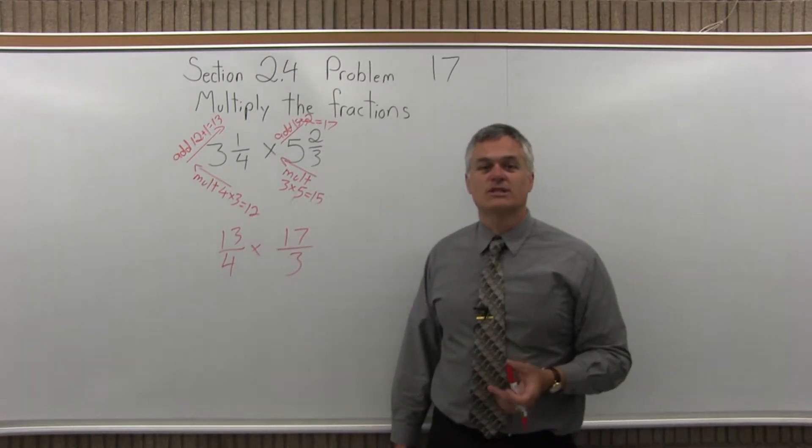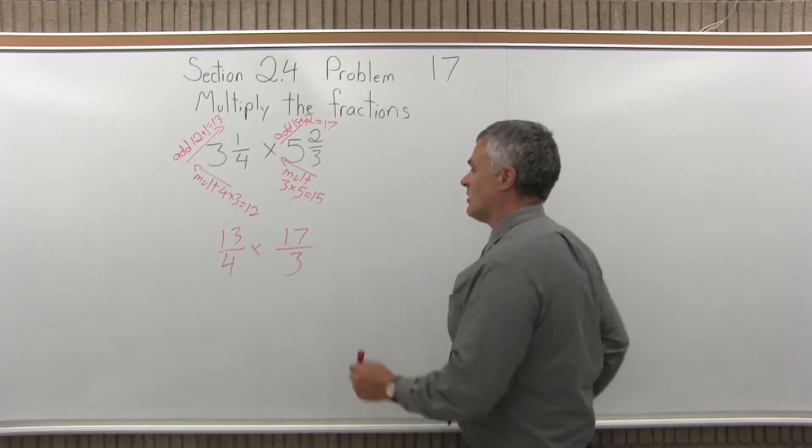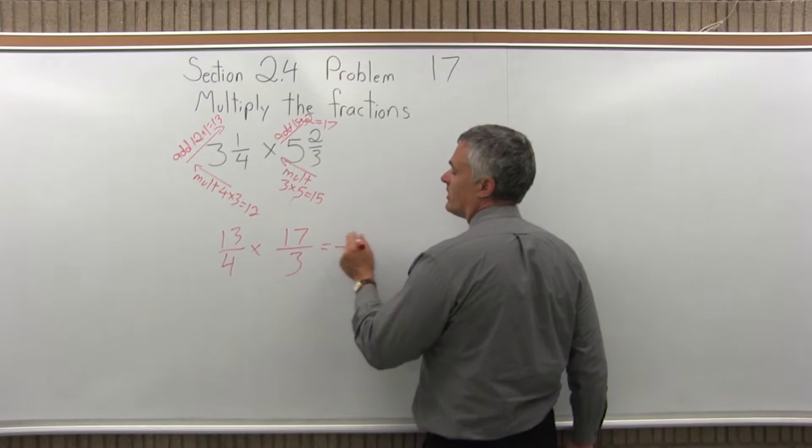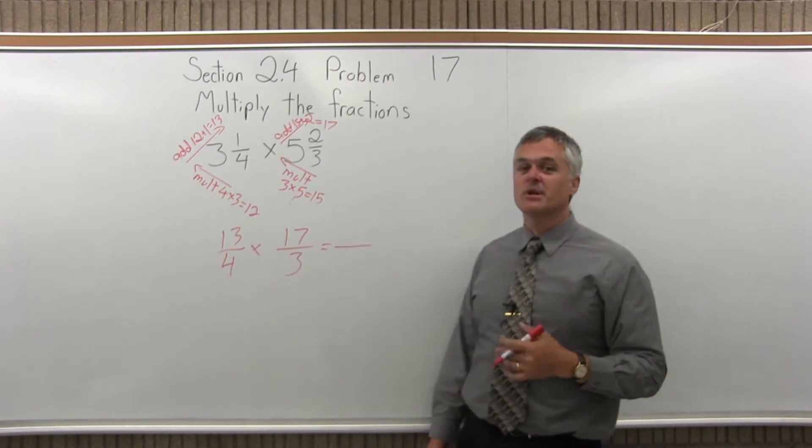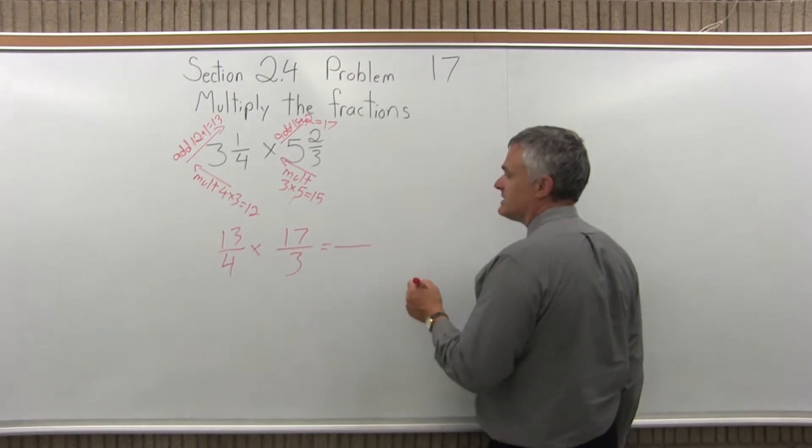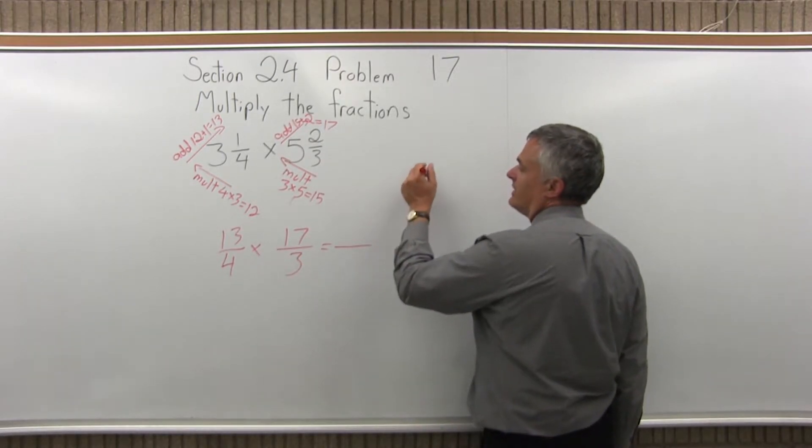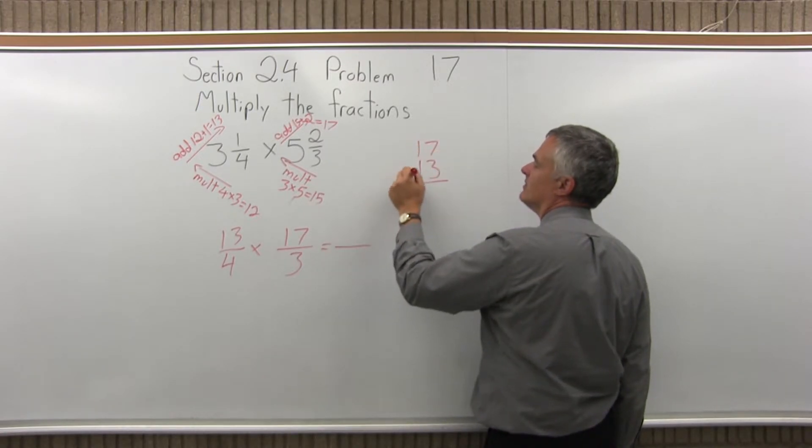Now I have two fractions that multiply that only have a numerator and a denominator, no whole number mixed in. So now for the tops or numerators, I have to multiply 13 times 17. Well, that's big enough that I don't think most people will be able to do that in their heads. So off to the side, let me just multiply 13 times 17.